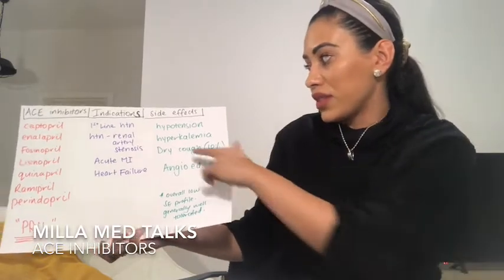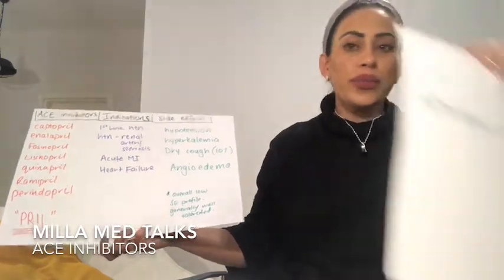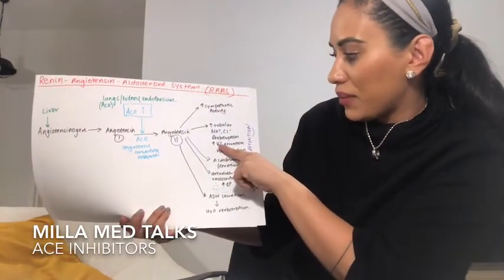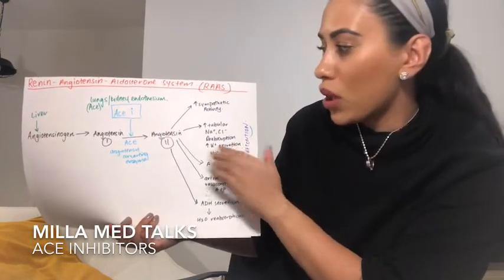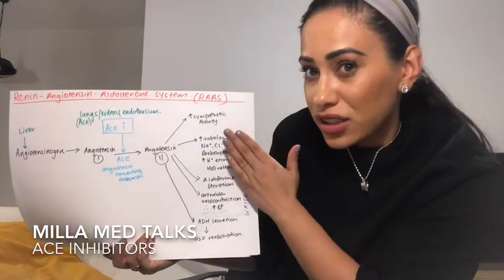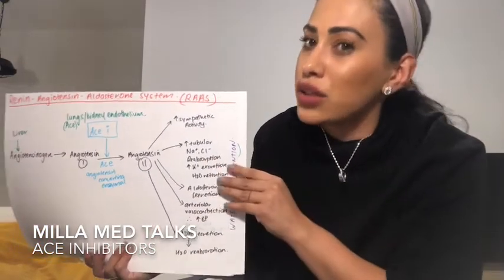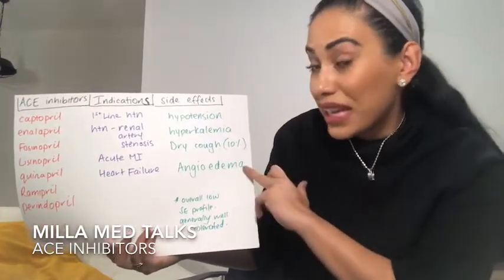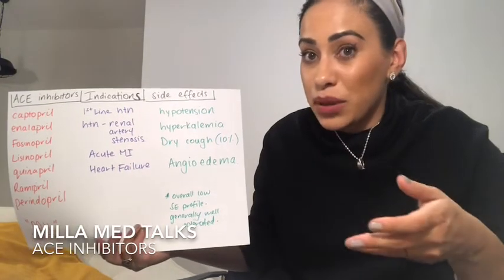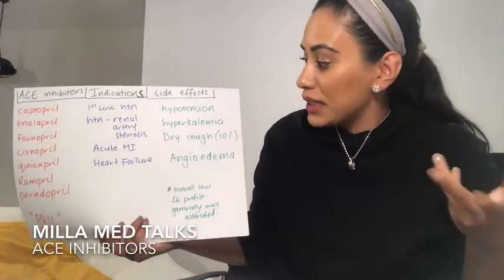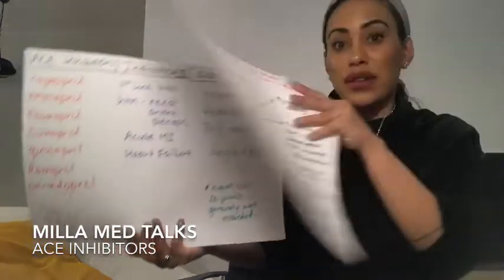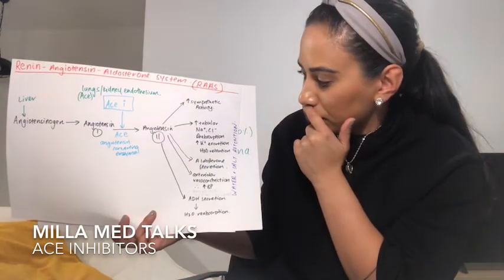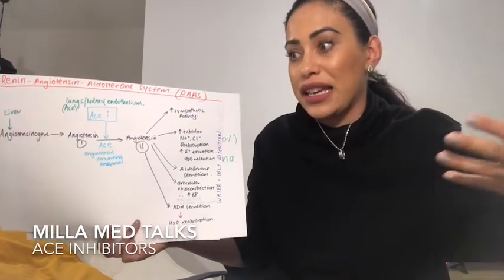We don't want to run the risk of hyperkalemia because, as we saw in the RAS system, usually angiotensin 2 will cause potassium excretion. Because we're blocking that, potassium is not going to get excreted — it's going to be held in the body. So we do need to monitor potassium levels to make sure they don't go too high. Angioedema is also a side effect — a buildup of fluid due to the mechanism. By inhibiting this, we can get various fluid effects in parts of the body.